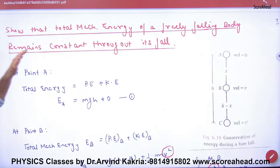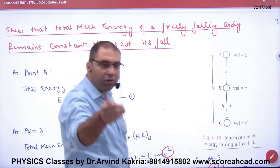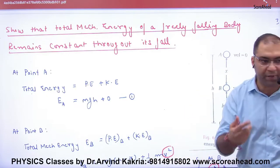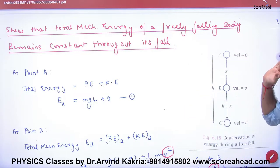The topic is total mechanical energy of a freely falling body remains constant throughout its fall because the body is under gravity and gravity's force is conservative. An example is that you take a body and drop it. The initial velocity is 0.